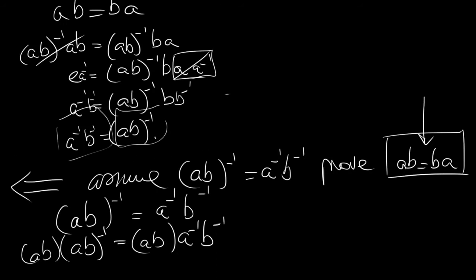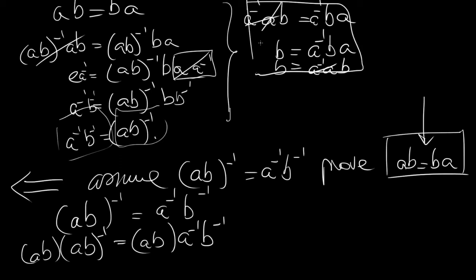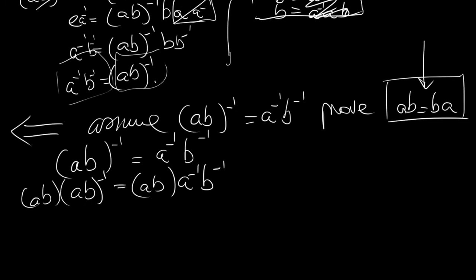Note: in the first direction G was assumed abelian so left or right didn't matter, but in this direction we are not assuming commutativity, so it is very important to consistently operate every time on the left or every time on the right. So those terms are inverses of each other, giving us E equals AB · A⁻¹B⁻¹.